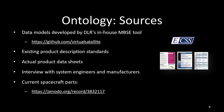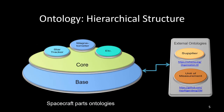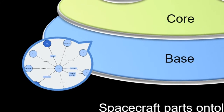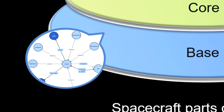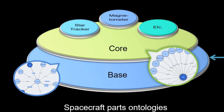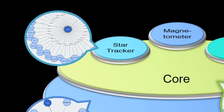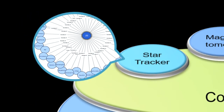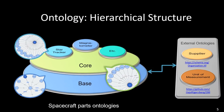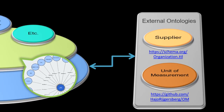The current spacecraft parts ontology is publicly available at the provided link. The developed spacecraft parts ontology has a hierarchical structure. At the bottom level, a base ontology, we define basic classes such as part type and property type. In the middle, the core ontology, we define commonly used properties of spacecraft parts. At the top level, we have multiple ontologies separated by categories, where each category has definitions of properties unique to that category. Additionally, existing ontologies such as organization and unit of measurement ontologies are reused.